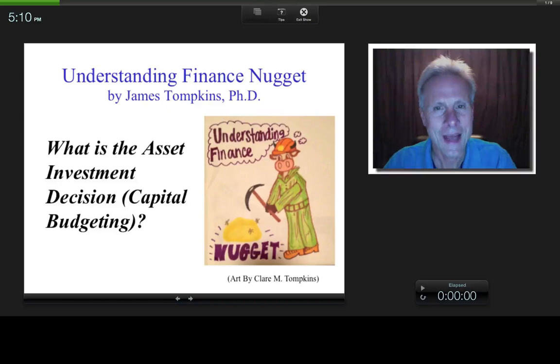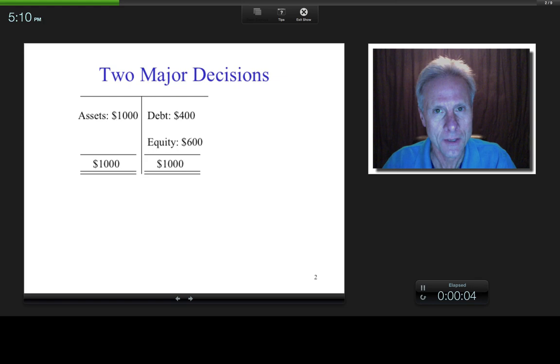Hi everybody, this is James Tompkins. So what is the asset investment decision, or what is otherwise known as capital budgeting? Well, the reason I call it the asset investment decision is because when a company spends money on something, it's going to show up over here as an asset.